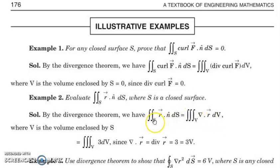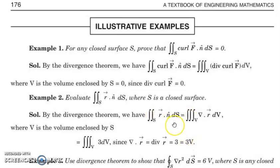By the Divergence Theorem, the double integral over S of R · N dS equals the triple integral over V of ∇·R dV. Since ∇·R = 3, the constant 3 comes outside, leaving 3 times the triple integral over V of dV. That triple integral represents the volume — volume is given by the triple integral of dV over the region. So the required value is 3V, where V is the volume of the region bounded by the closed surface S.